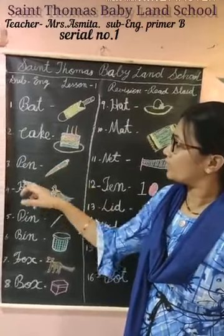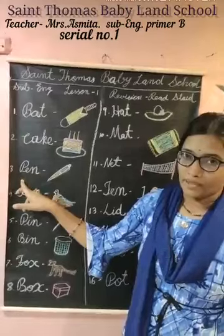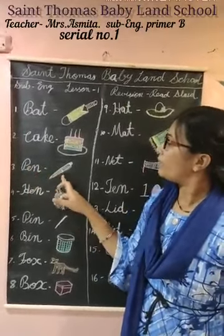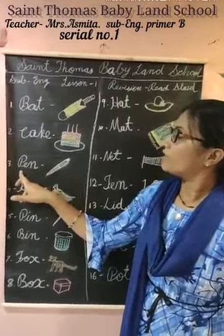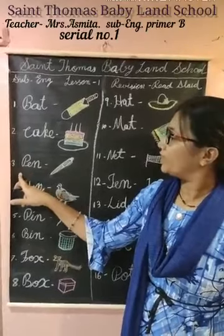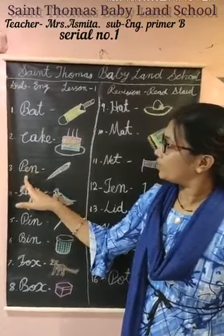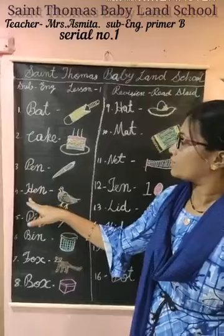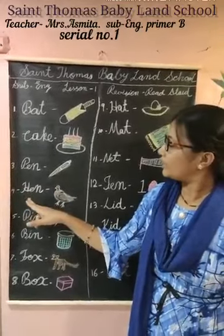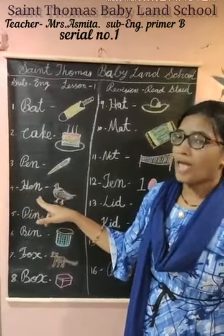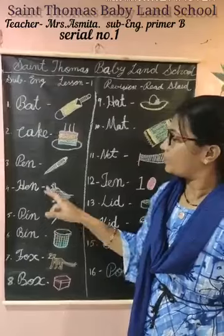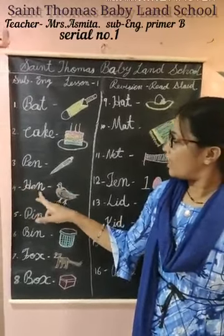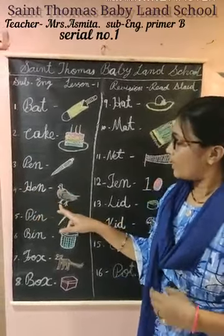The next one is pen. P, E, N — pen. Read together: P, E, N — pen. Next one is H, E, N — hen. H, E, N — hen.